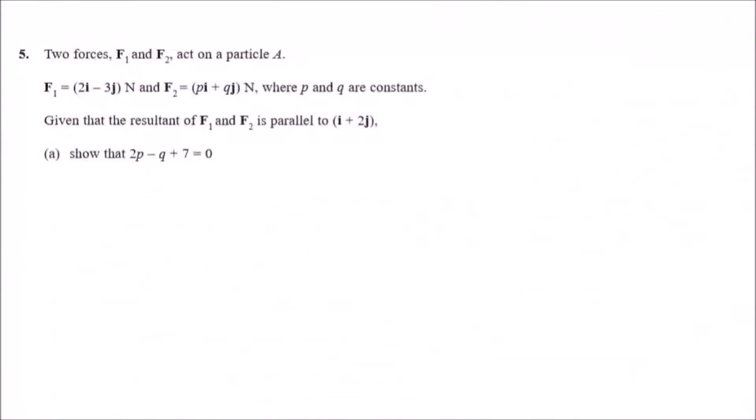Okay, question five. Two forces F1 and F2 act on particle A. You can see that F1 is written as a vector and so is F2. Given that the resultant F1 plus F2 is parallel to i plus 2j.